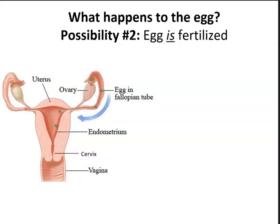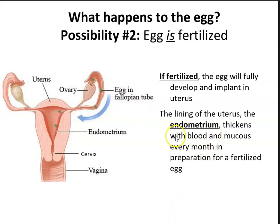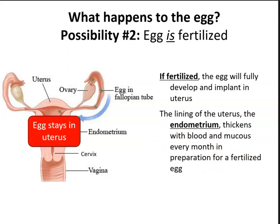The second possibility: the egg is fertilized. Fertilization usually takes place within the fallopian tube, specifically the ampulla. If fertilized, the egg will fully develop and implant in the uterus. Chemical signals and hormones secreted by the ovary tell the female body it is pregnant and will stop ovulation the next month. The endometrium thickens with blood and mucus in preparation for the fertilized egg, which will hopefully become a normal healthy baby.